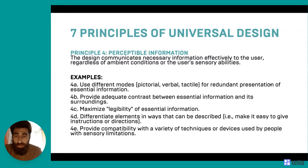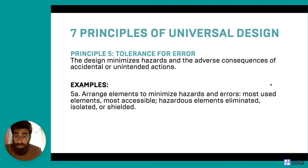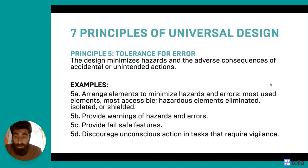Principle five is tolerance for error. The design minimizes hazards and the adverse consequences of accidental or unintended actions. Examples include: arrange elements to minimize hazards and errors — most used elements most accessible, hazardous elements eliminated, isolated, or shielded; provide warnings of hazards and errors; provide failsafe features; and discourage unconscious actions in tasks that require vigilance.